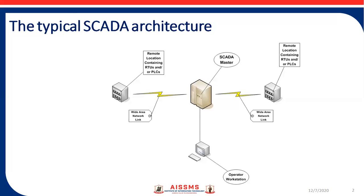This figure shows a typical SCADA architecture, which mainly consists of five components. Those are SCADA master terminal unit (MTU), operator workstation which consists of human machine interface and operator console, RTU (remote terminal unit) which may be a PLC, and the last element is communication media.